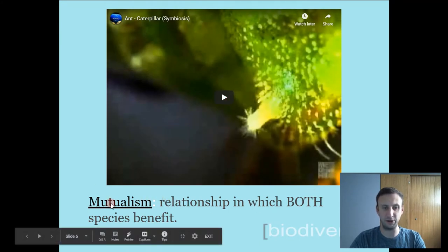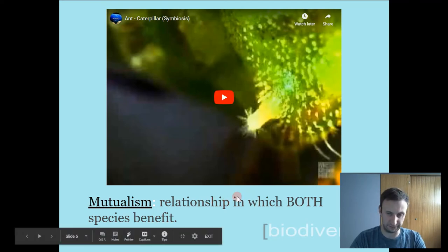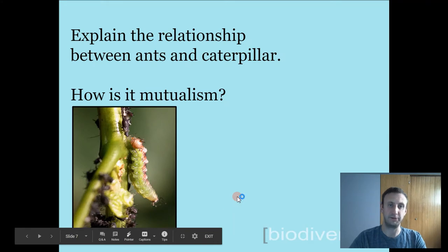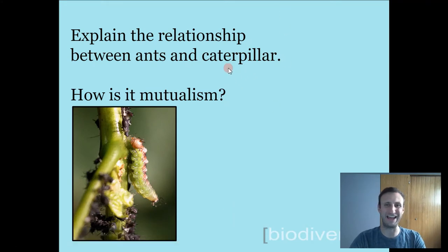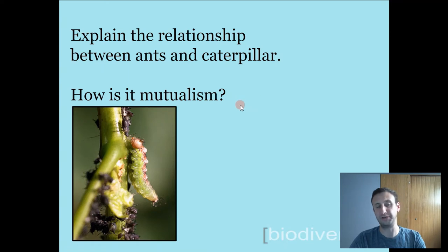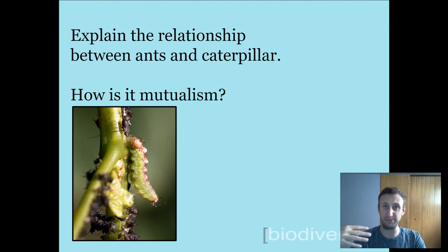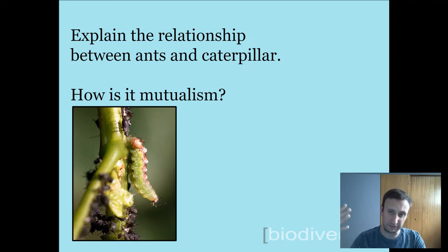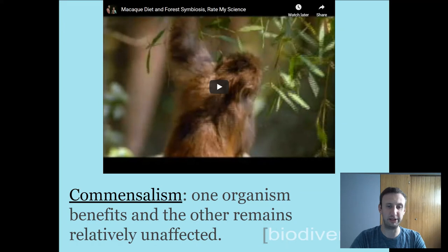Let's take a look at a video which is an example of mutualism — a relationship in which both species benefit. As you saw, the caterpillar gets protection by doing the thing with the pulsating food treat. As a result, the ants get a tasty treat and become bodyguards for the caterpillar. The ants get food and the caterpillar gets protection — both species benefit. That's why it's mutualism.